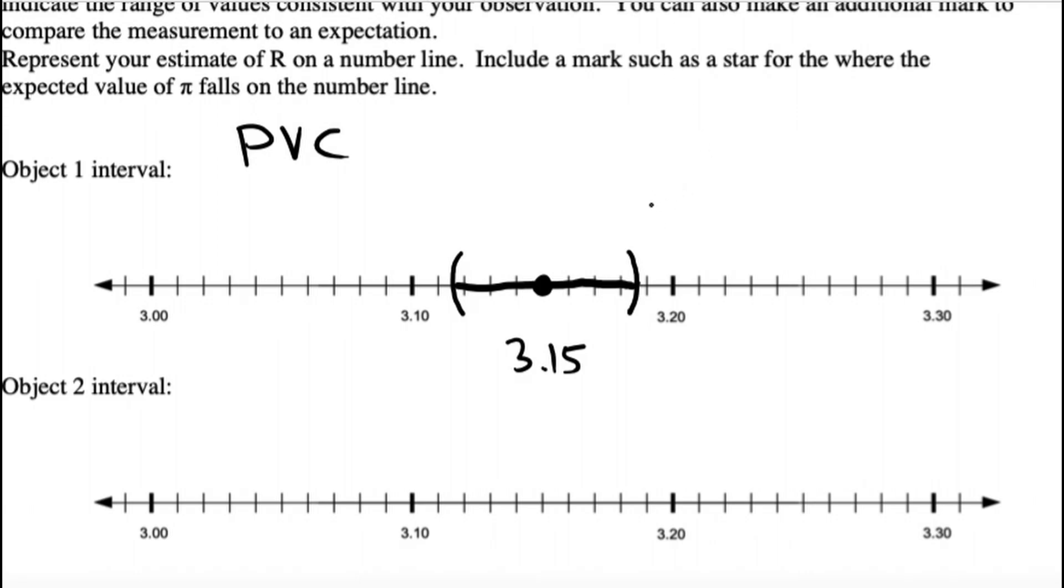And, it could have been as low as 3.115. Should be approximately symmetrical, this interval. And then, you just shade it in. And that represents your confidence interval for π. This is, of course, an experimental result, it would be called in science.